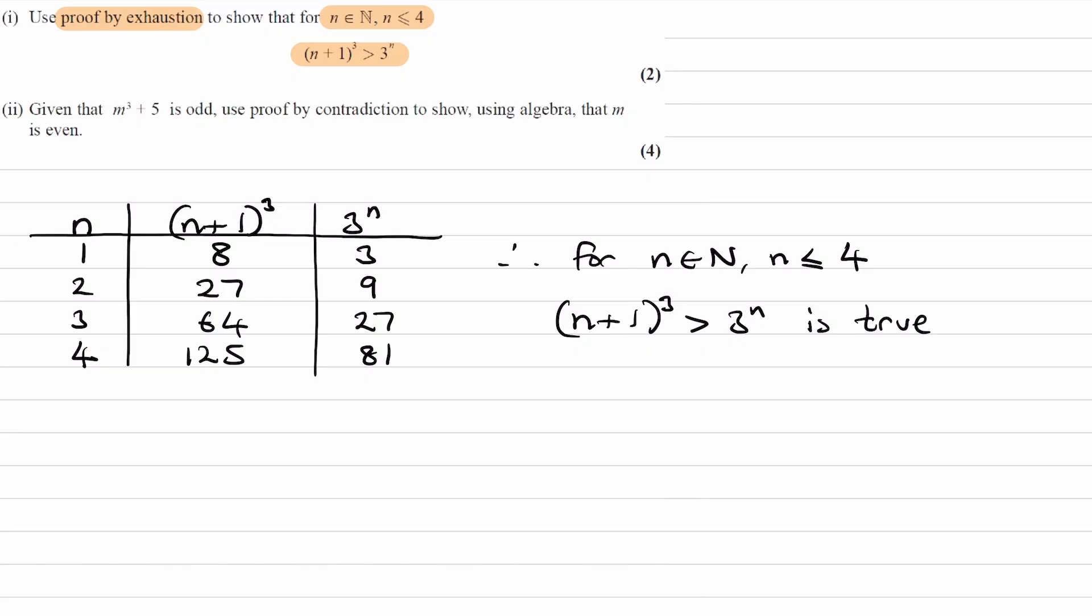On to part 2. Given that m cubed plus 5 is odd, use proof by contradiction to show using algebra that m is even. So, for proof by contradiction questions, the first thing you want to do is find out what your assumption is. The assumption is the opposite of what we're trying to prove. More formally, it's called the negation.